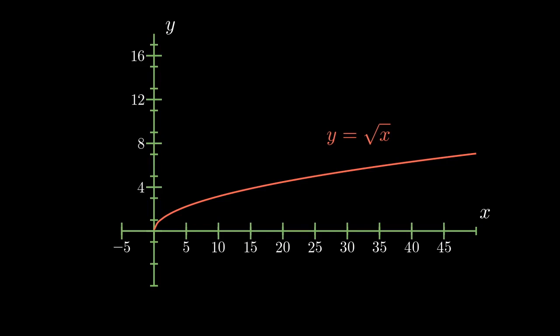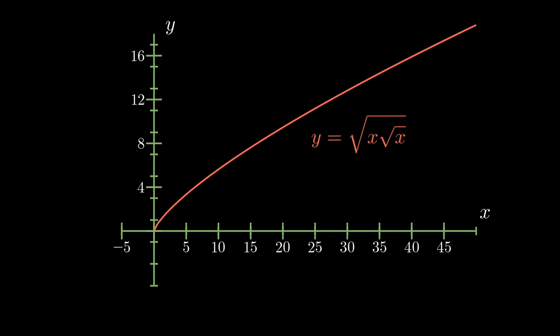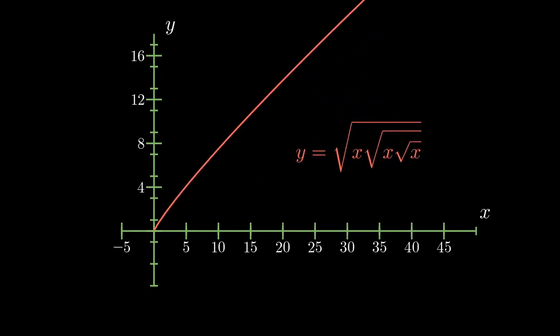So we can start off with the graph of y equals radical x, and then maybe think, okay, we'll add in the next radical, and then maybe one more radical. And then at this point, we might be willing to posit a guess about what this is approaching, maybe y equals x.